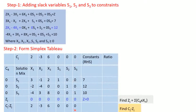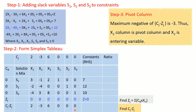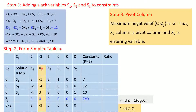Step 3 is to determine the pivot column by selecting the maximum negative value from the Cj minus Zj row. From this row, the maximum negative value is minus 3, so the x2 column is the pivot column and x2 is the entering variable.